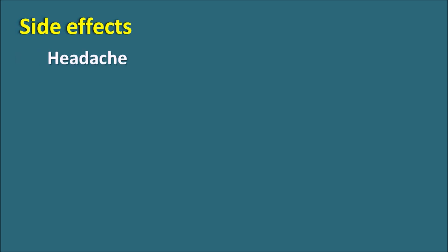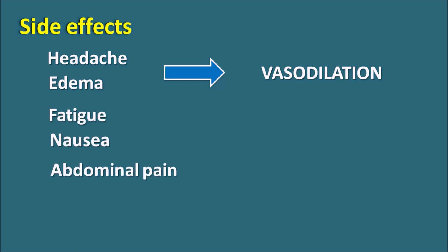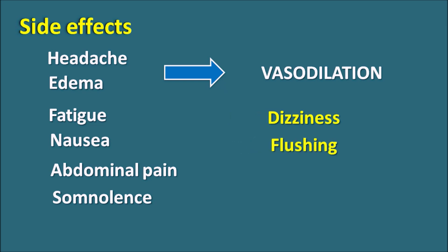What are the side effects? The most important side effects are headache and edema. These are mainly related to vasodilation and increased capillary permeability. Headache is due to cerebral vasodilation and edema is due to accumulation of body fluids. Apart from these, amlodipine can also produce fatigue, nausea, abdominal pain, somnolence, and vasodilatory symptoms like dizziness and flushing.